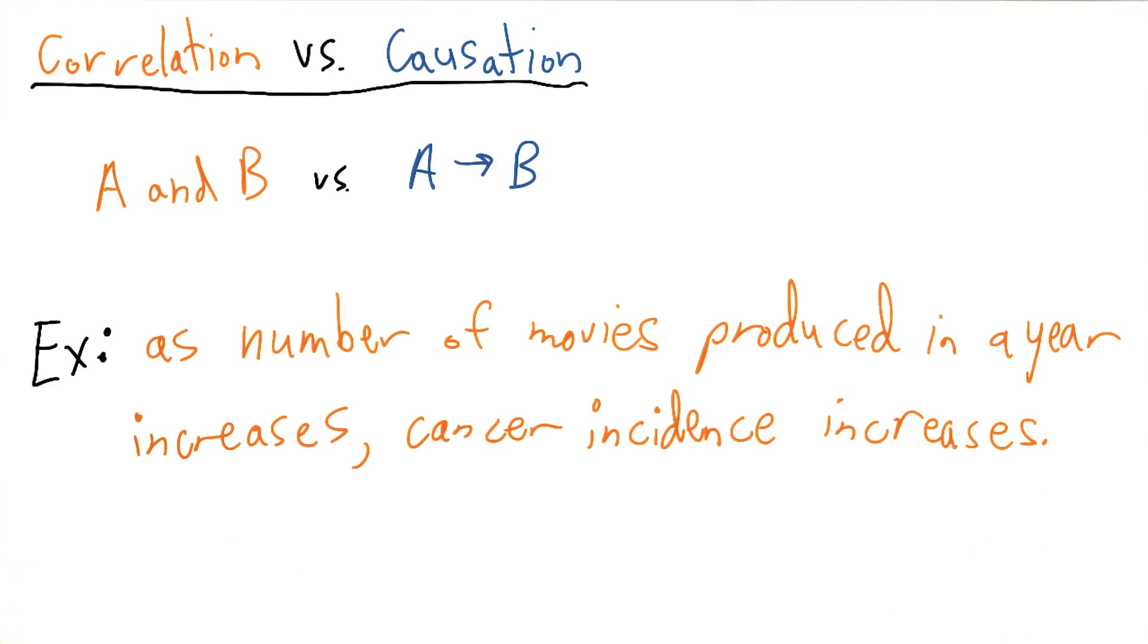Now you might be able to say that as the number of movies produced increases, people go to the movies more often and thus exercise less, increasing cancer incidence in the population. And while that may be true, an analyst might conclude a stronger relation between the number of movies produced and cancer incidence to be a causation instead.